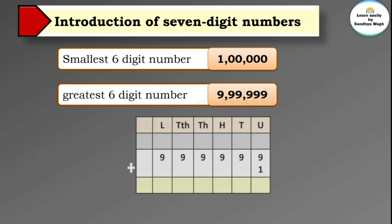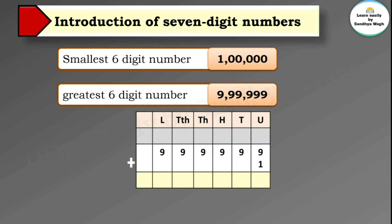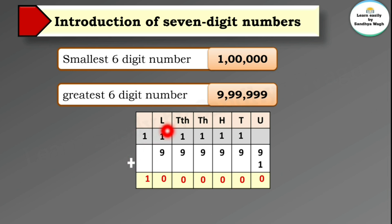When we add one to the greatest six-digit number, let's see what we get. Nine plus one is ten — write zero in the units place and carry one over. Continuing this process, the carry-over digit moves through the tens, hundreds, thousands, ten-thousands, and lakhs places, giving us a new digit at the ten-lakhs place. So we get a seven-digit number.